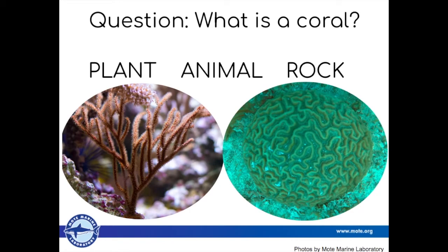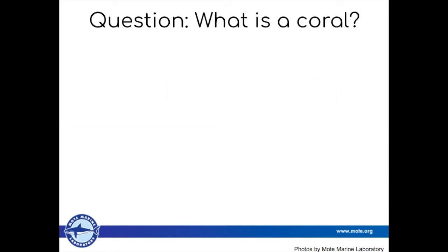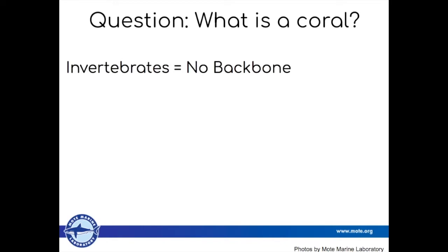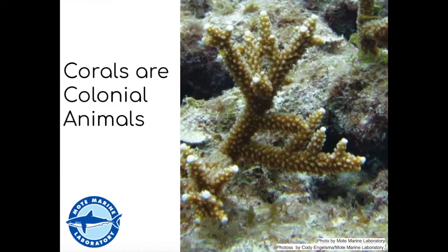Do you think a coral is a rock, plant, or animal? If you guessed animal, you're right! Although corals can look like plants or rocks, they are actually animals that live, breathe, and grow. Corals are part of a group of animals called invertebrates, which means they don't have a backbone. When you see a close-up of a coral, you might think it looks like a jellyfish upside down — and that's because they're closely related. You can think of them as cousins.